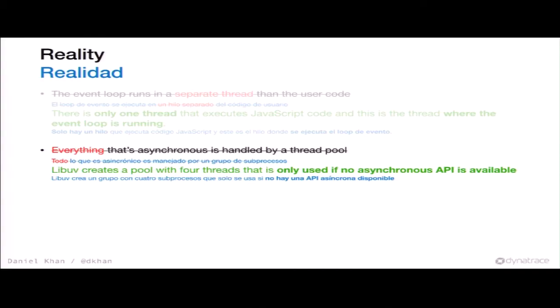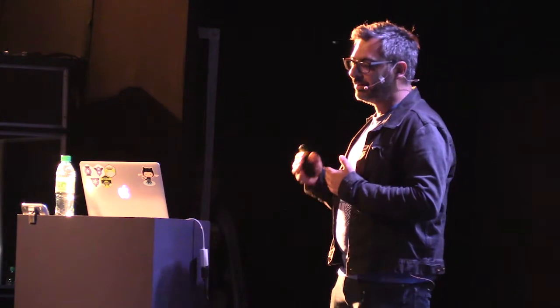Second: not everything asynchronous is handled by a thread pool. LibUV creates a pool with four threads — you can override that with an environment variable — but it only uses the thread pool when there is really no other way. On a modern system you have many APIs that are already asynchronous, like epoll or database libraries. LibUV is smart enough not to stupidly throw every task at the thread pool.